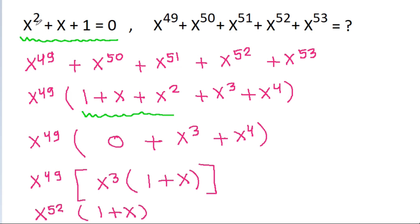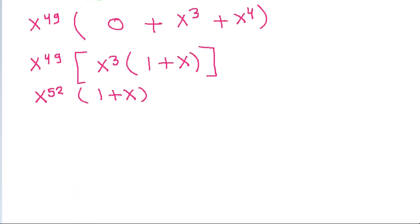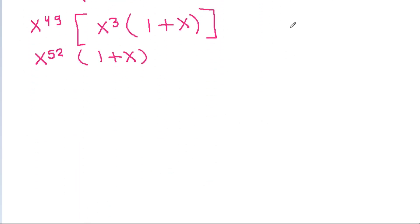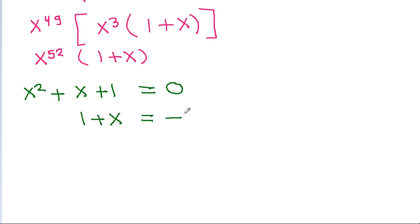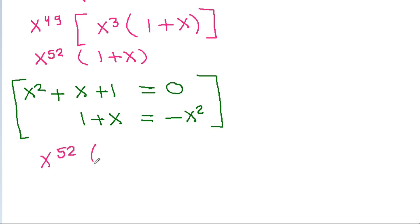And we have x squared plus x plus 1 is equal to 0. So we can get 1 plus x is equal to minus x squared. So it is x power 52 times 1 plus x equals minus x squared, and it is minus x power 54.